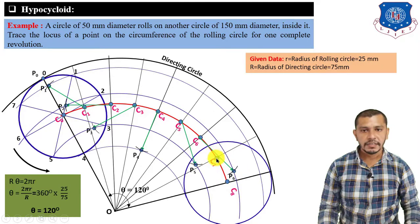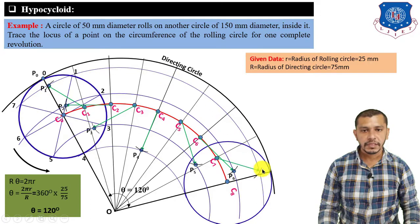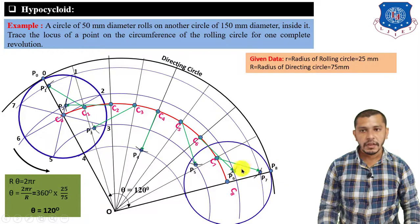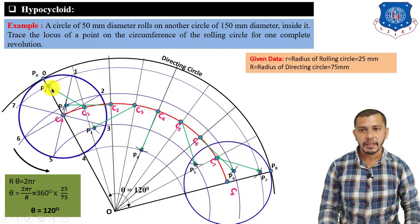Take center at C7, arc on the seventh division — P7. Take center at C8, arc on the eighth division — P8. Now draw the freehand curve passing through P0, P1, P2, P3, P4, P5, P6, P7, and P8 — we get the hypocycloid.